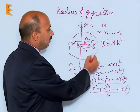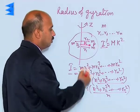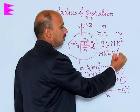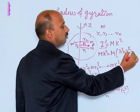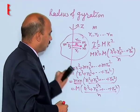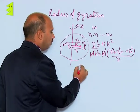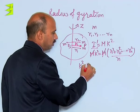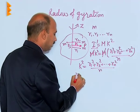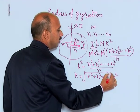Now, if these two moments of inertia are equal — I' and I — then we can write: m·k² = m·(r1² + r2² + ... + rn²) / n. We can cancel m and n, so we get k² = (r1² + r2² + ... + rn²) / n, and therefore k = √[(r1² + r2² + ... + rn²) / n].